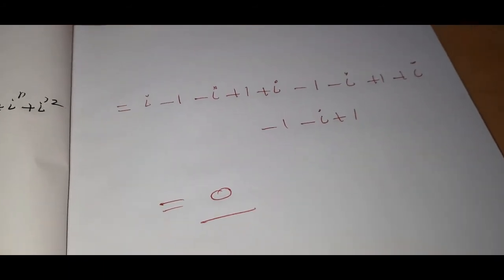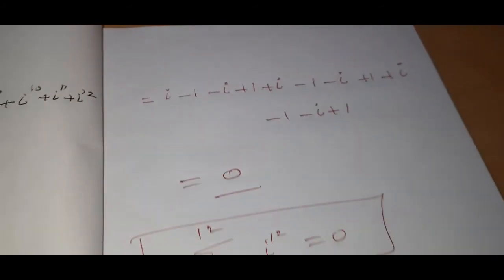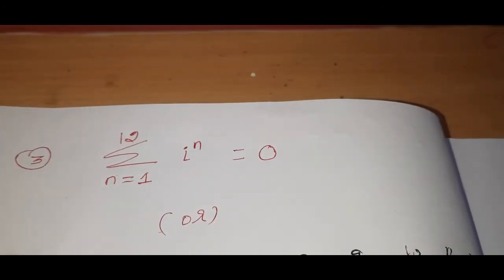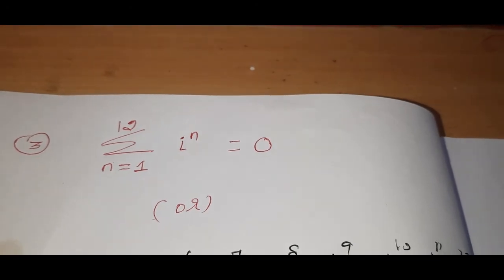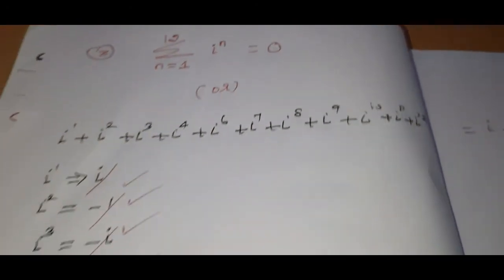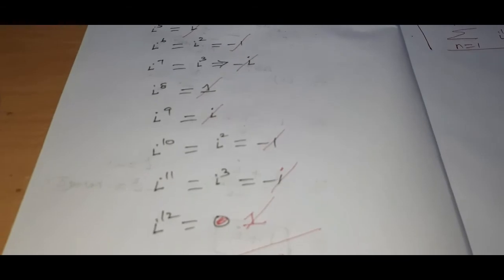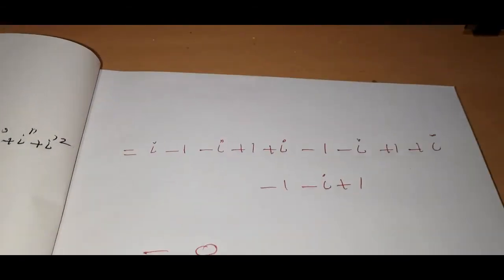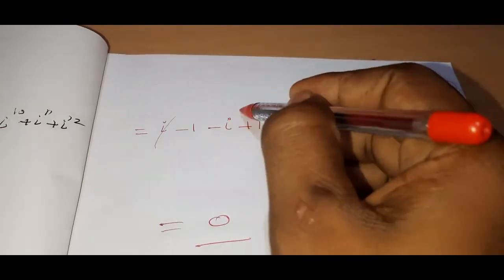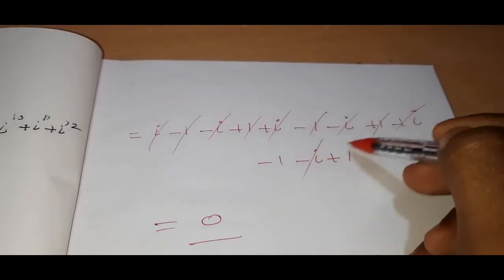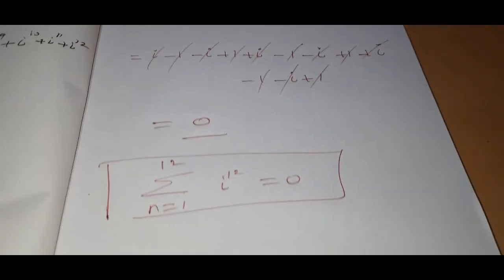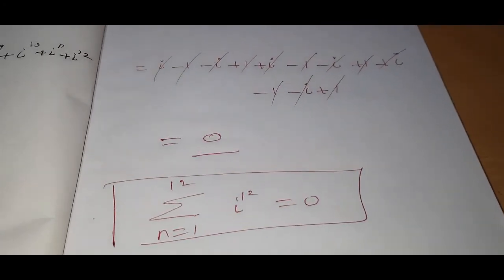Writing out the full cycle: plus i, minus i, minus 1, plus 1, plus i, minus i, minus 1, plus 1, plus i, minus i, plus 1. Everything cancels to zero. This is the answer to question number 3.